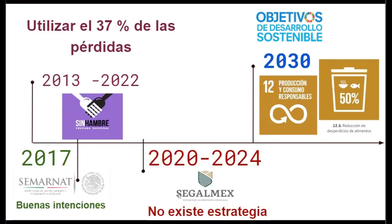De ahí surgen muchos bancos de alimentos. Surgen durante este periodo en apoyo a la Cruzada Nacional Sin Hambre, pero no estaban bien cimentados y no estaban regulados. Este programa, a pesar de que duró más de ocho años, no tuvo ni contó con una buena planeación en cuanto al desperdicio de alimentos ni tampoco en generar la seguridad alimentaria de los mexicanos. Después de ocho años de implementación, el año pasado, en enero, se dio un análisis de este plan y se dijo: no cumplimos con los objetivos. Se retiró la Cruzada Nacional Sin Hambre sin hacer un reporte o un análisis de lo que había o no sucedido con el 37% de pérdidas que intentaban utilizar.